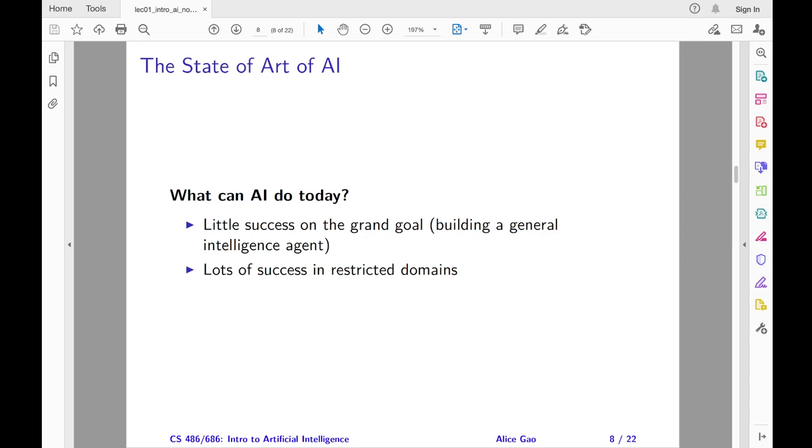There are, however, lots of progress in many restricted domains. The best way to get a sense of what artificial intelligence is about is to look at some applications. Let me describe some examples of problems in AI research. This will be a biased introduction to AI since time is so limited.